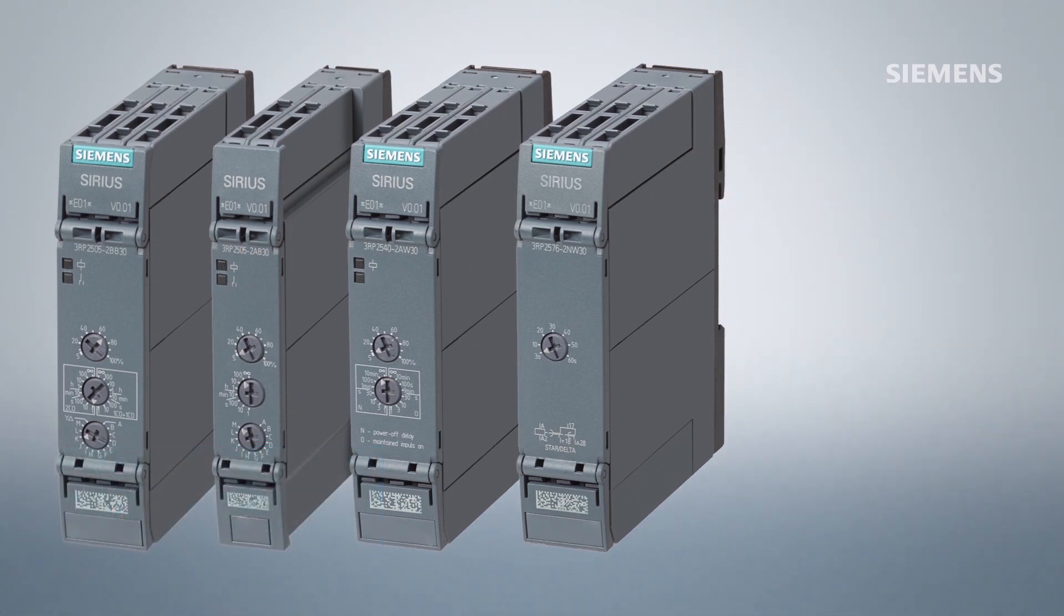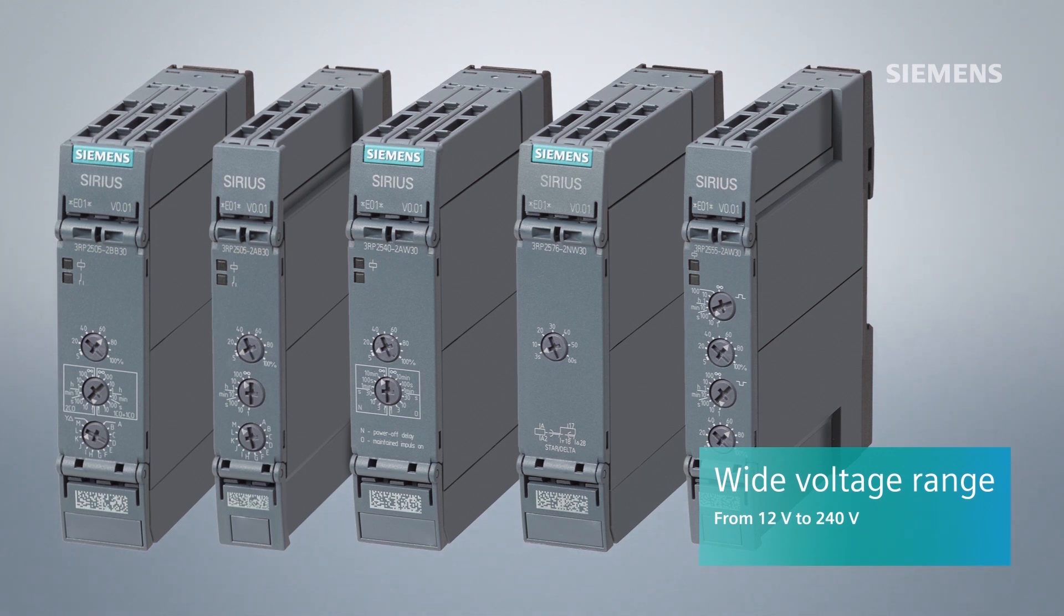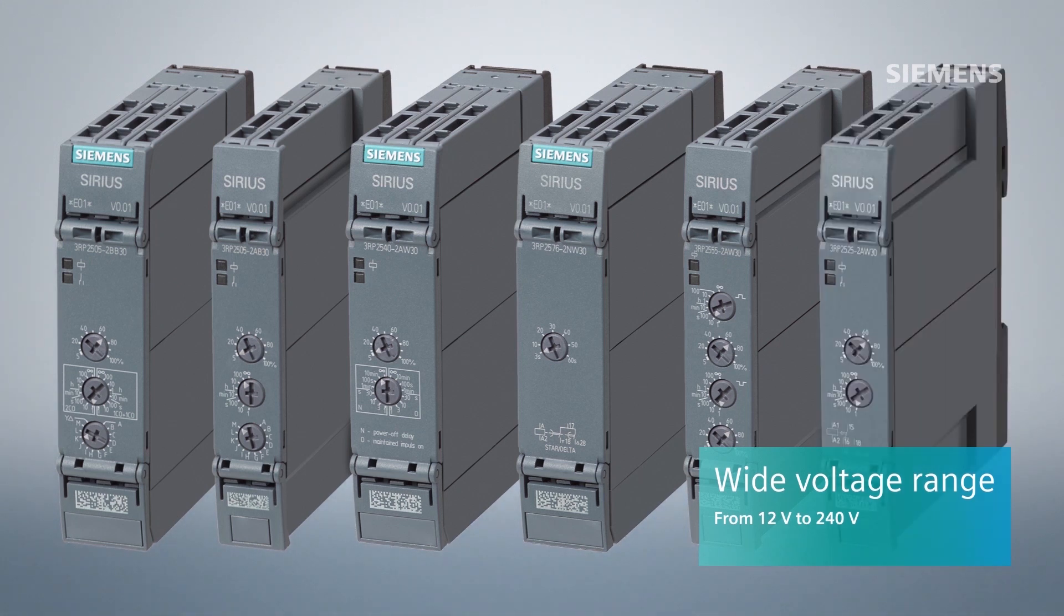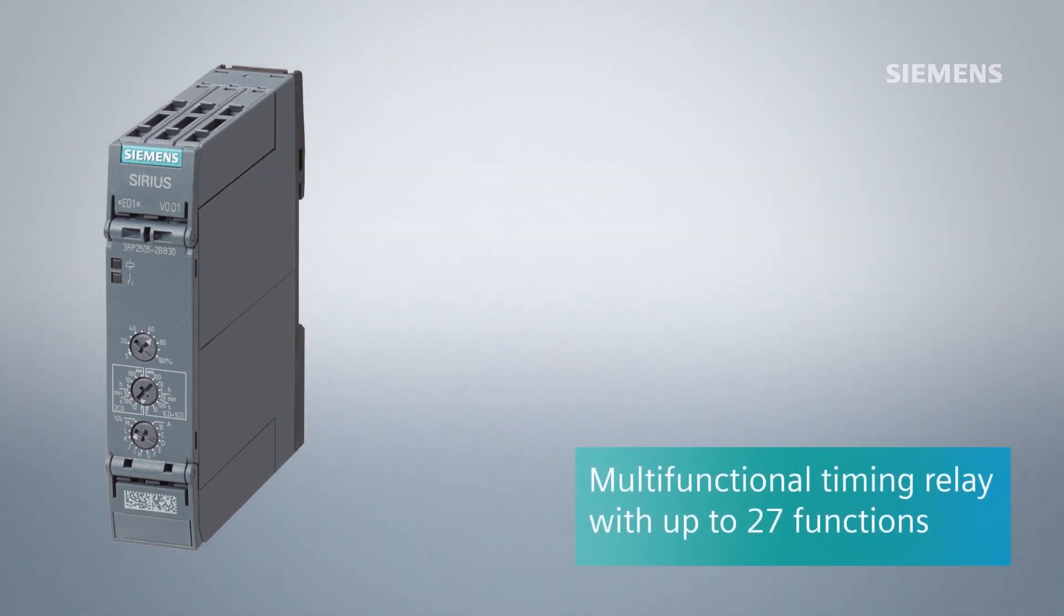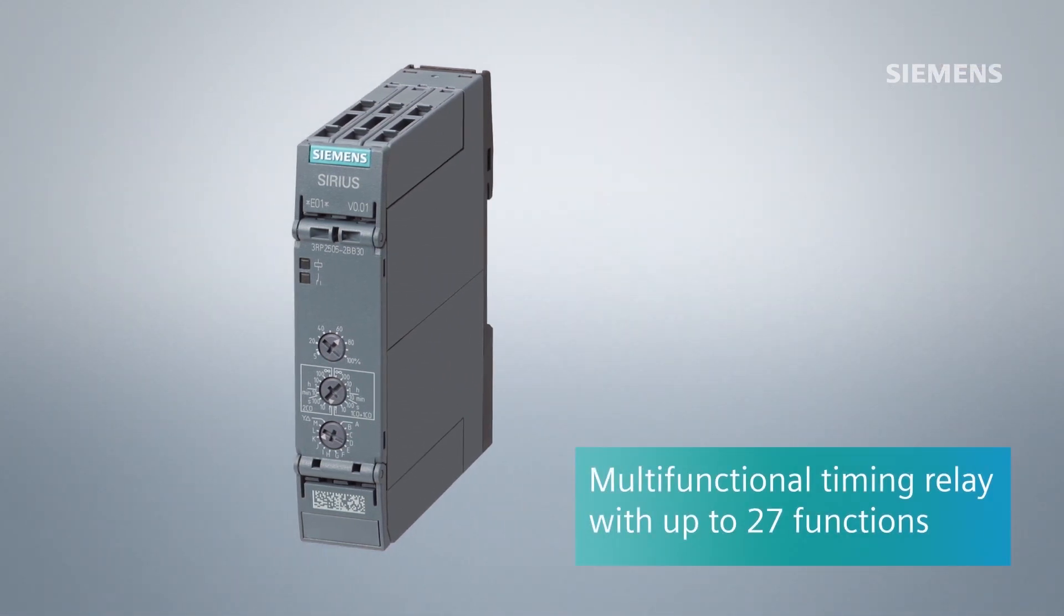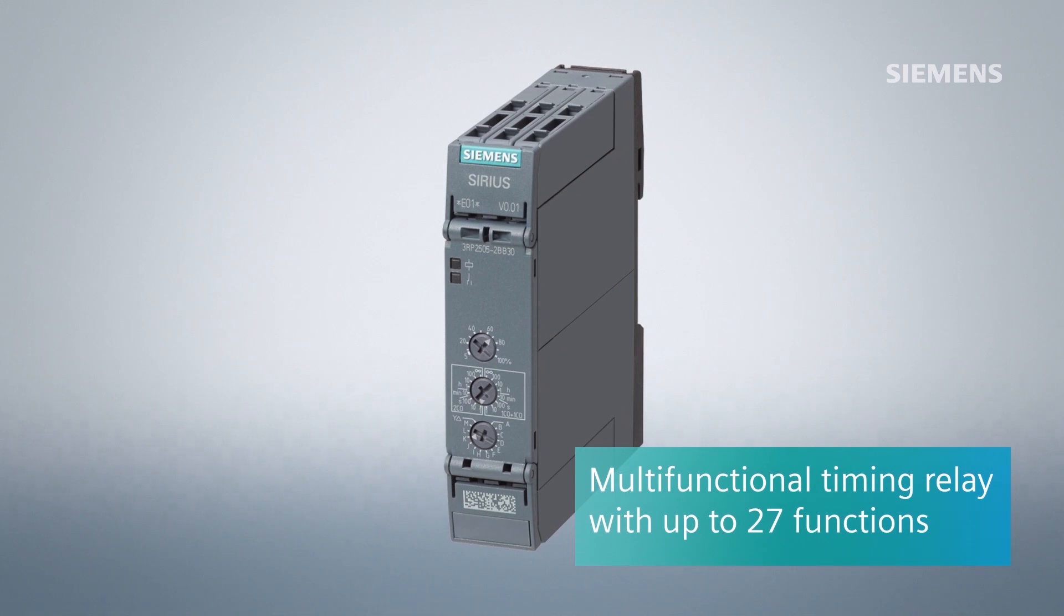You will get an optimized timing relay for the wide voltage range from 12 to 240 volts each. For instance, you will be able to use up to 27 functions with the multifunctional timing relay.